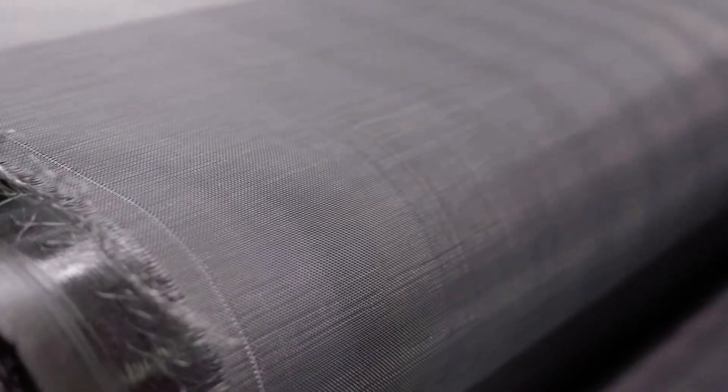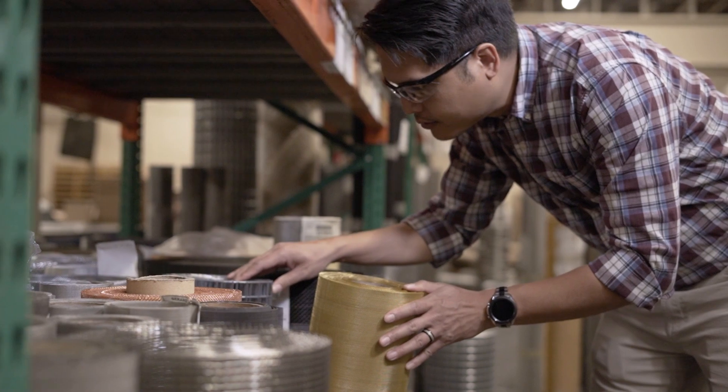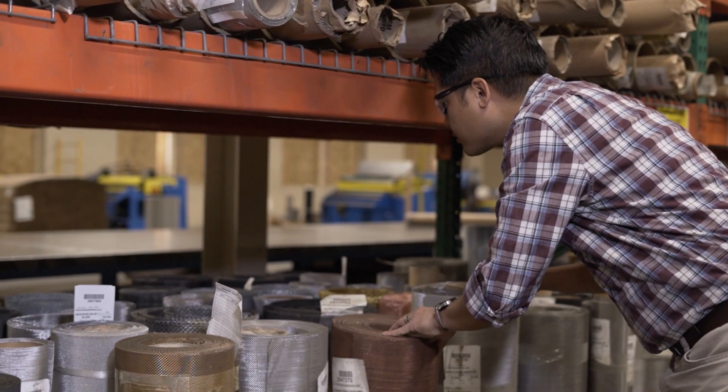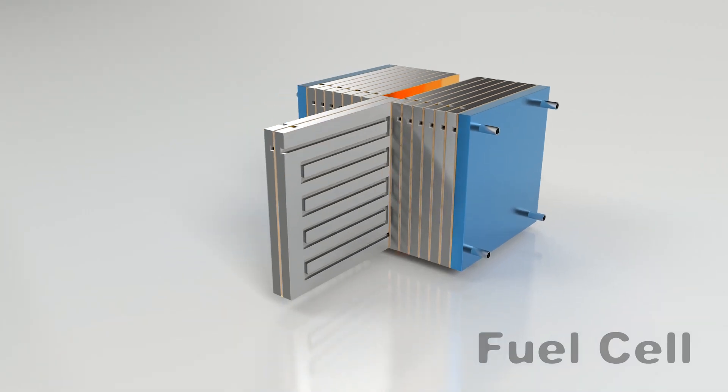Depending on your specifications, a range of mesh counts, weaves, wire diameters, coatings, alloys, and more could work. However, as the price of raw material increases, it becomes especially critical to lower the total amount of wire used in the weave while still meeting the requirements. Porosity is one of the key specifications when determining which wire mesh to use.